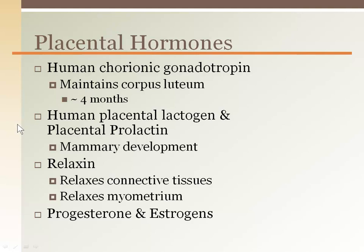Increased maternal lipolysis and blood fatty acid concentration decreases the mother's glucose utilization, increasing blood glucose levels with polyuria, causing some dehydration and thirst. Relaxin serves to loosen connective tissue, particularly in the pelvic girdle, so that the weight of the baby in the third trimester can expand the pelvic diameter, widening the hips. Relaxin also minimizes the contractility of the myometrium during the growth and development stages.